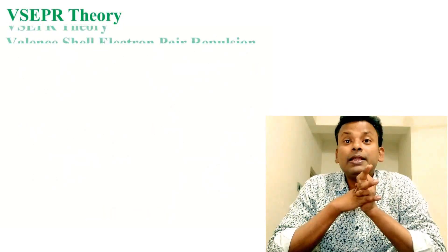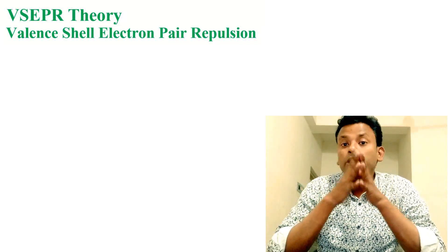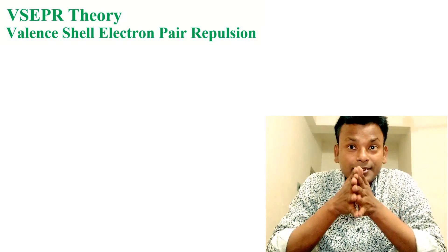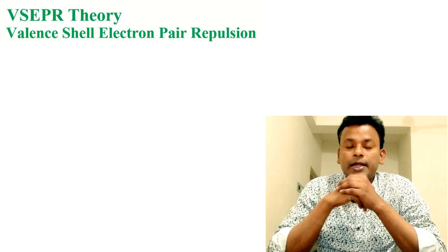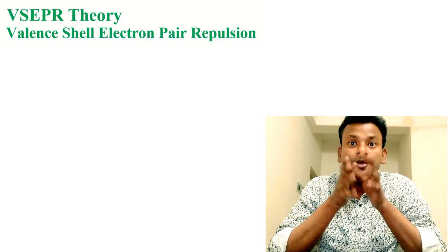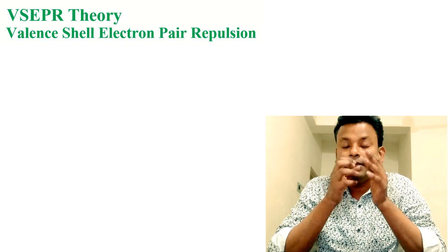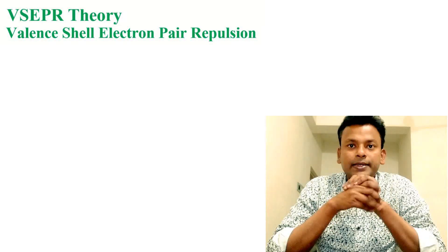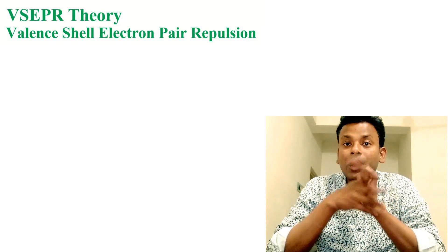VSEPR Theory — Valence Shell Electron Pair Repulsion Theory. This new theory, following Gillespie's suggestion, is called the Valence Shell Electron Pair Repulsion Theory. This theory proposes that the stereochemistry of an atom in a molecule is determined primarily by the repulsive interactions amongst all the electron pairs in its valence shell. The theory assumes that the valence shell electrons occupy essentially localized orbitals.